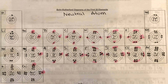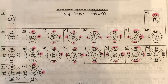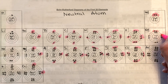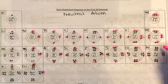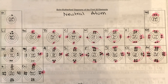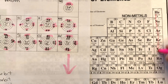All noble gases have eight valence electrons in their outermost shell, with the exception of helium. Neon has eight electrons in its outer shell, argon has eight, and this pattern continues down the periodic table.